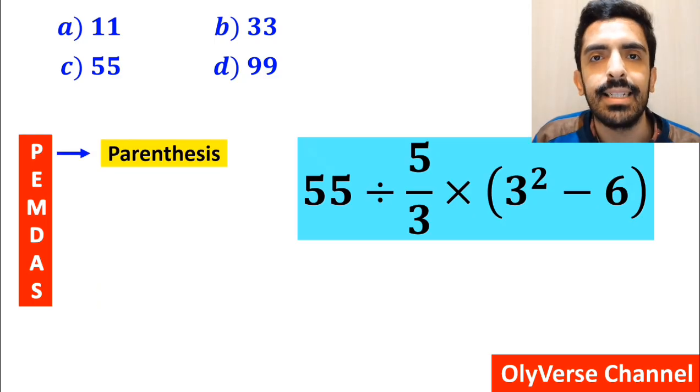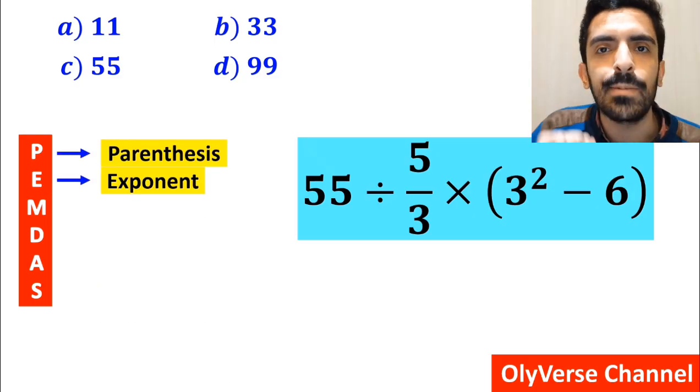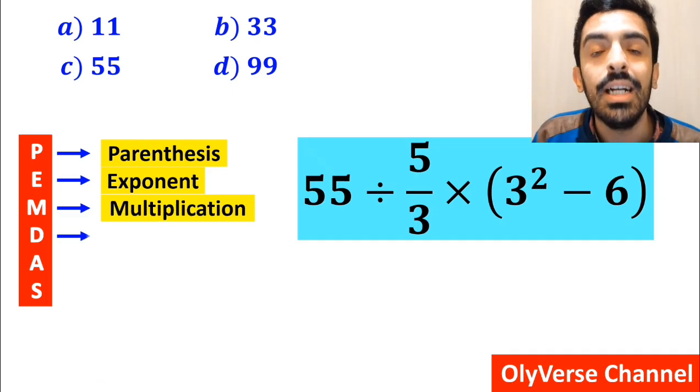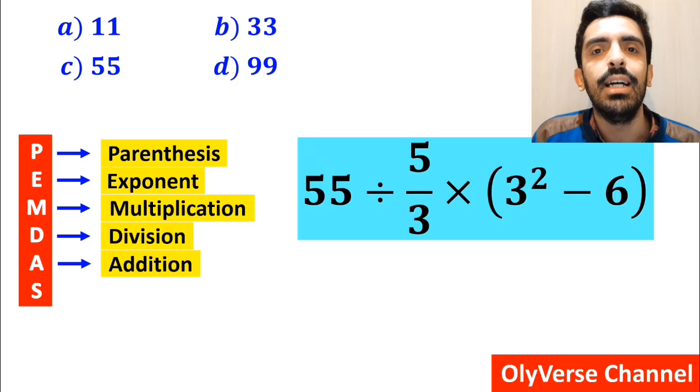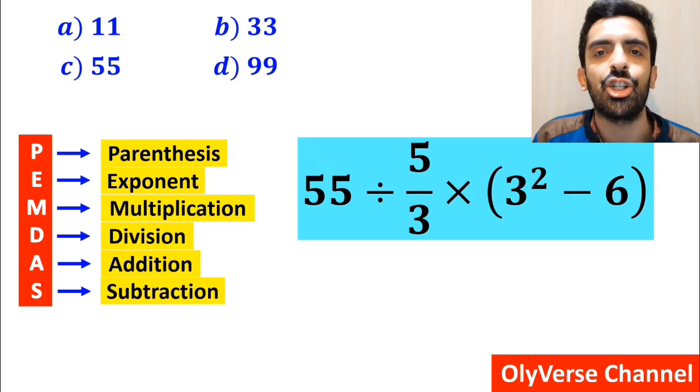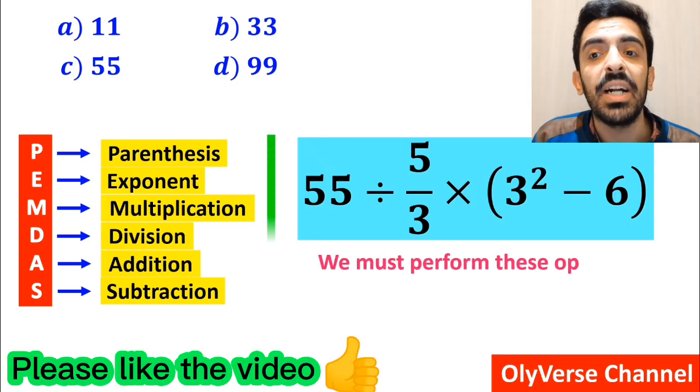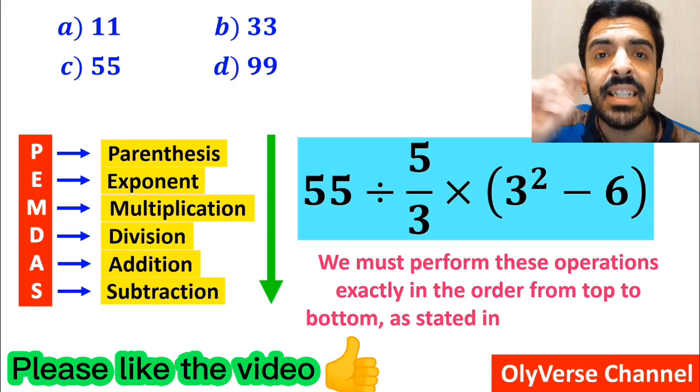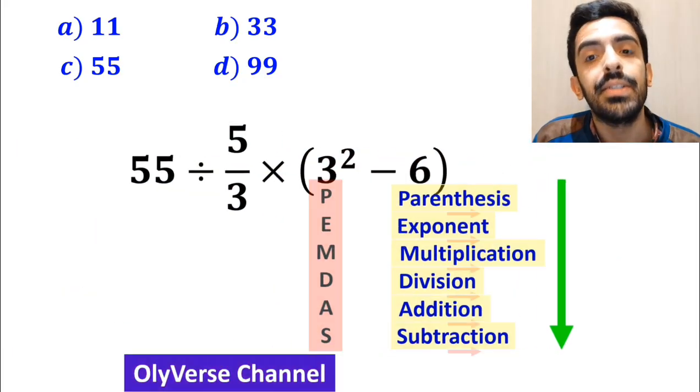In this rule, P stands for parenthesis, E stands for exponent, M stands for multiplication, D stands for division, A stands for addition, and S stands for subtraction. We must perform these operations exactly in order from top to bottom as stated in the PEMDAS rule.